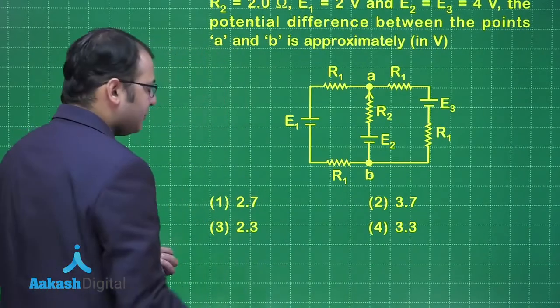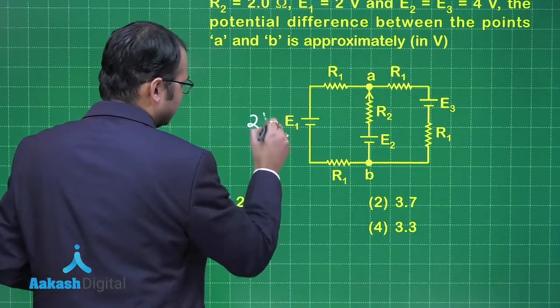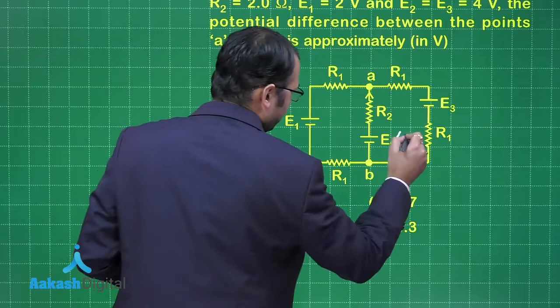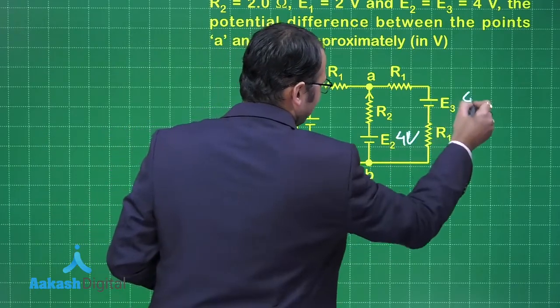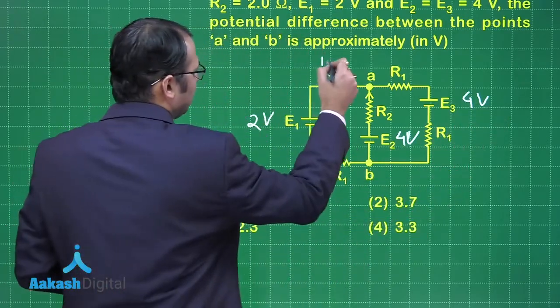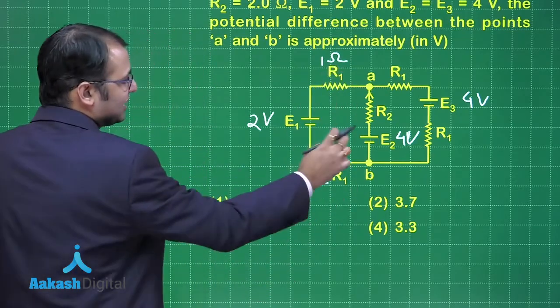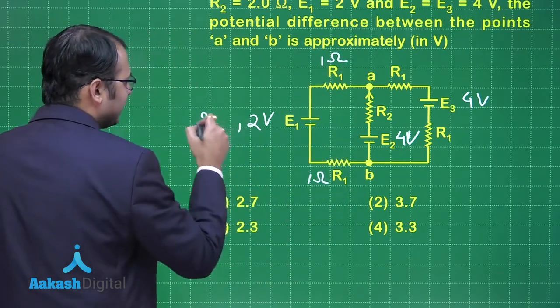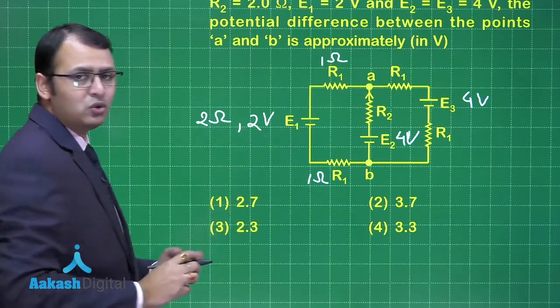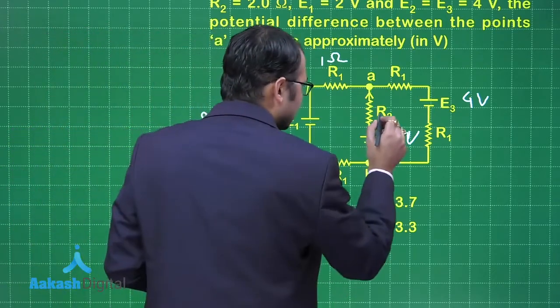For this we can use a direct relation. First we need to understand: this is 2 volts, this is 4 volts, and this is 4 volts. Now this being 1 ohm, these two are in series, so together they can be merged and treated as the internal resistance of this cell as 2 ohms.